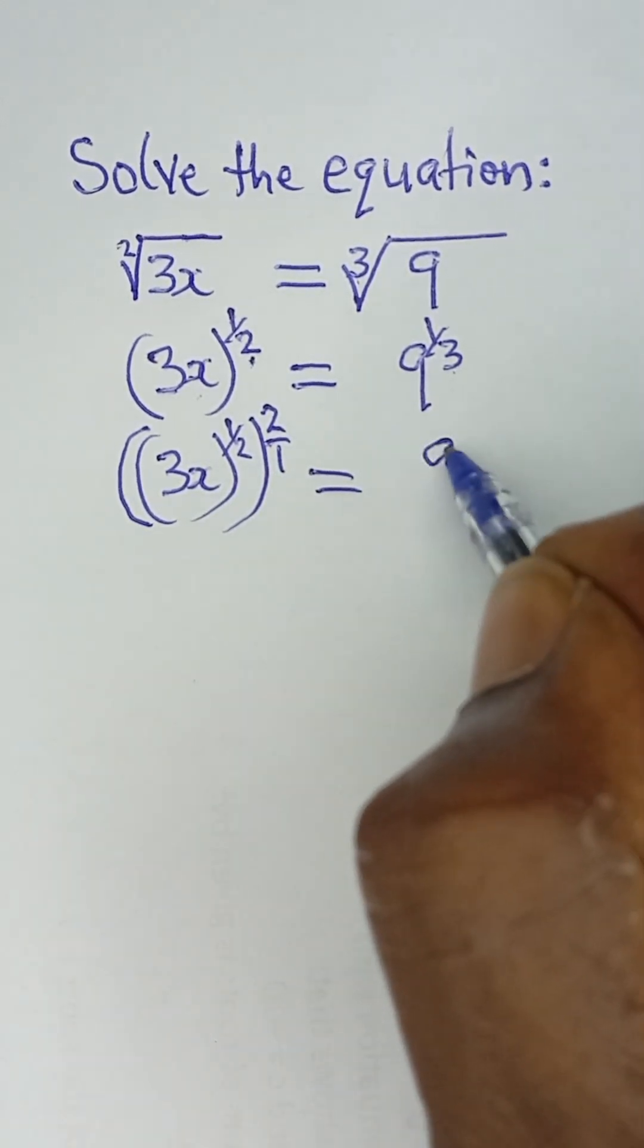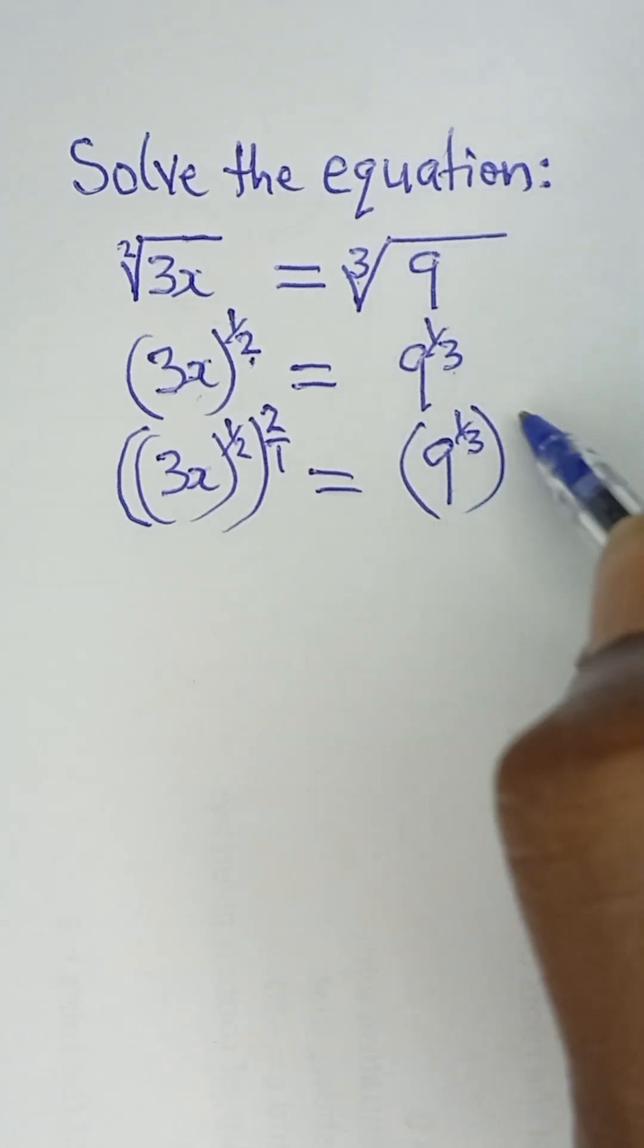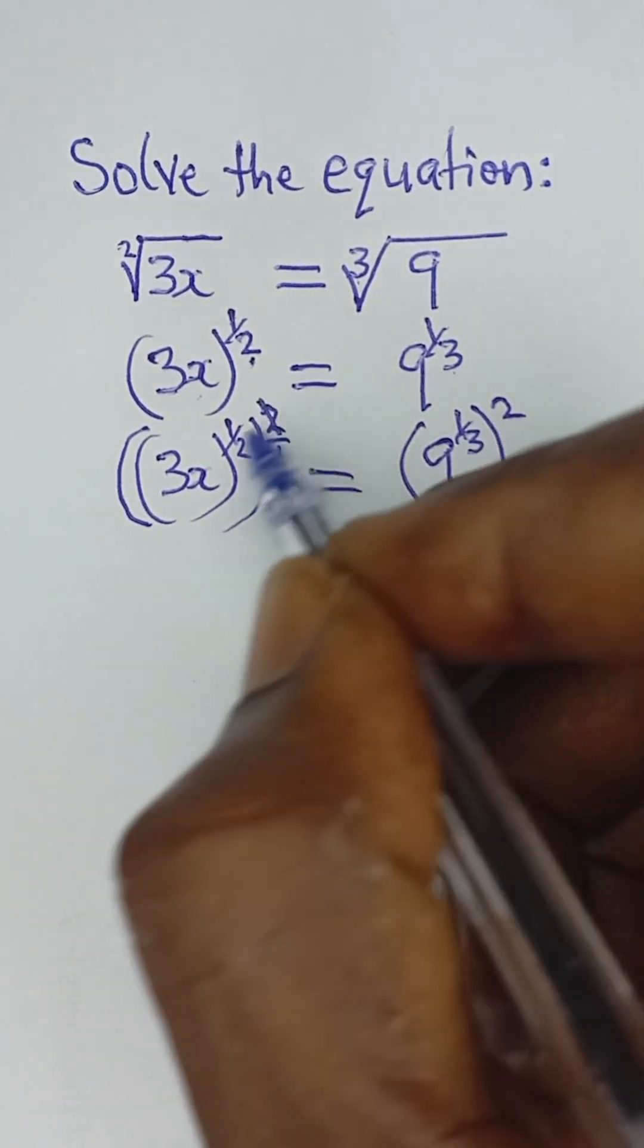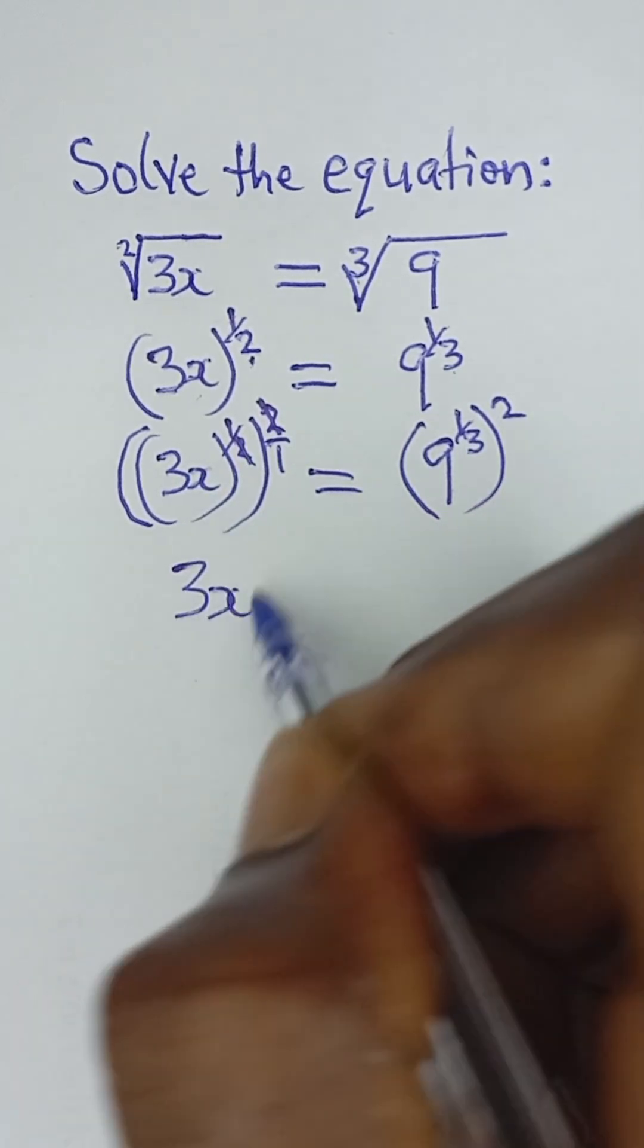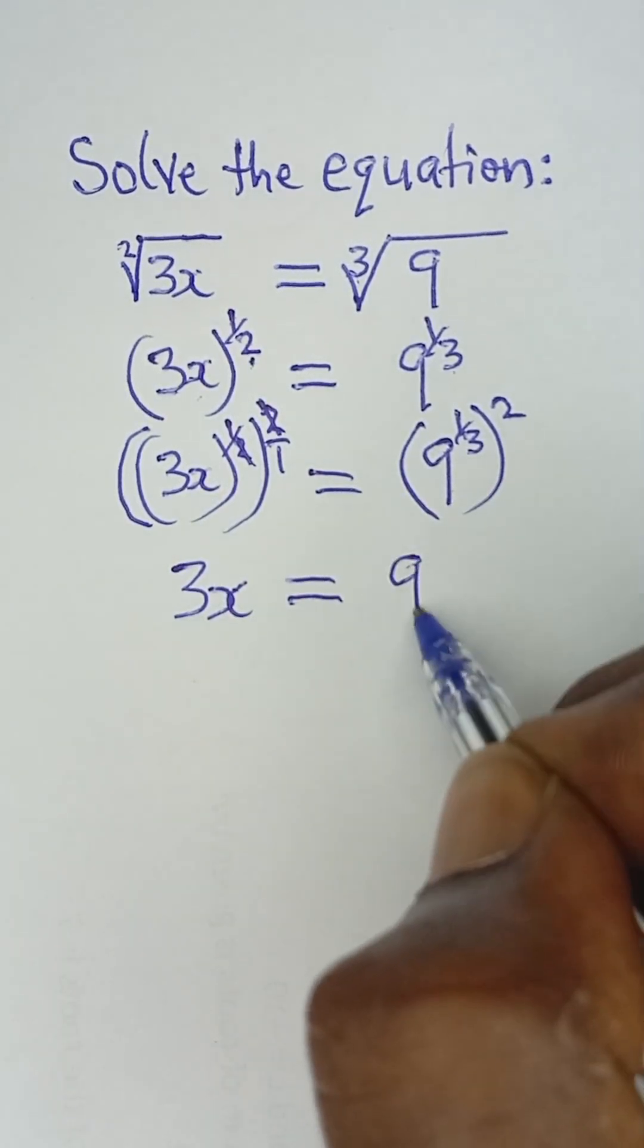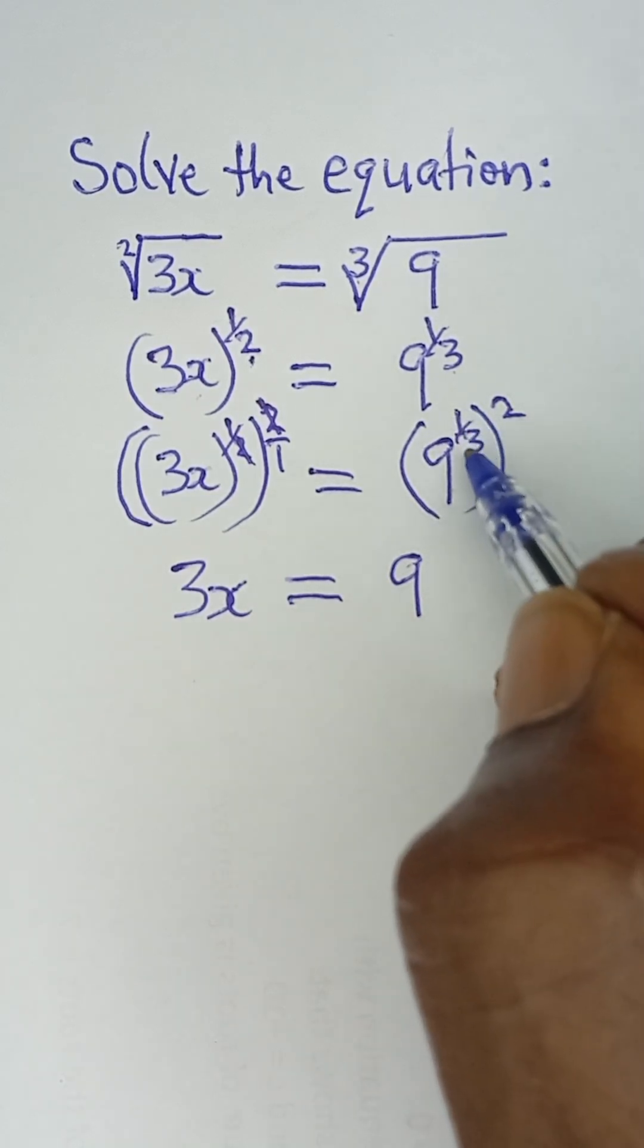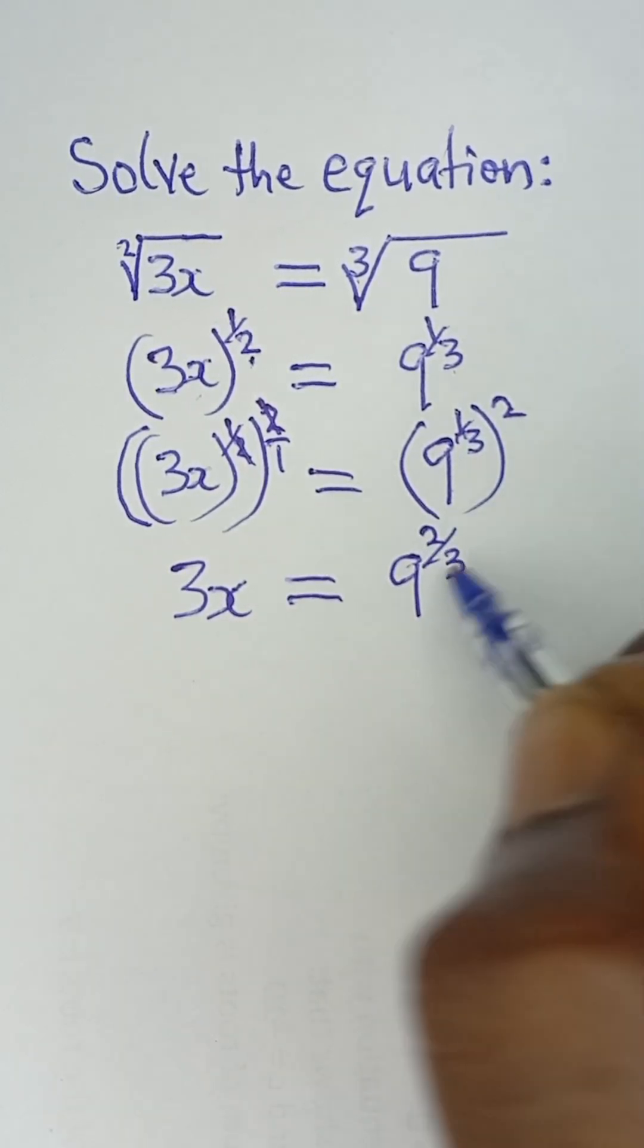We do the same thing to the other side of the equation: 9 raised to 1/3, all raised to the power of 2. We cancel the 2, and 3x is raised to the power of 1. That equals 9—you multiply the powers from indices—so 1/3 multiplied by 2 becomes 2/3.